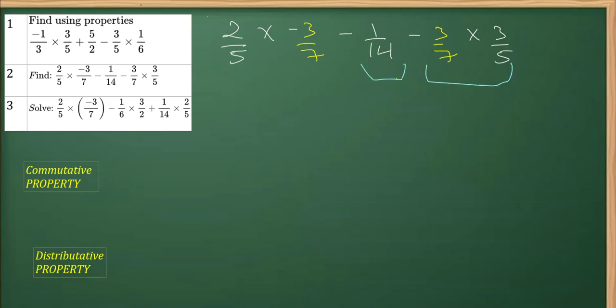Therefore first we'll be writing the first term as it is: 2/5 multiplied by -3/7, and this will proceed, that is -3/7 multiplied by 3/5.